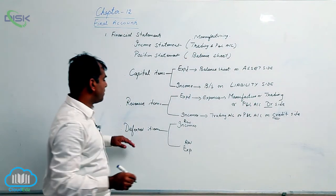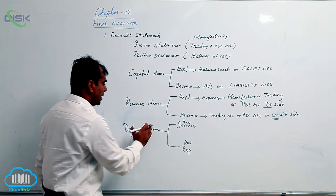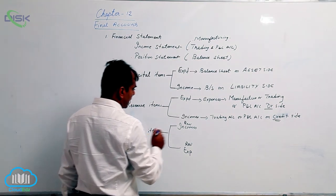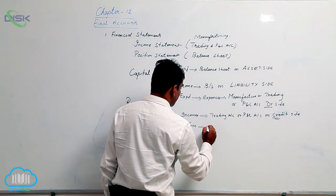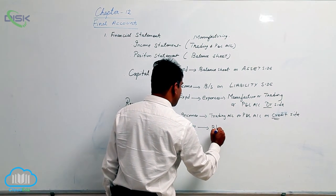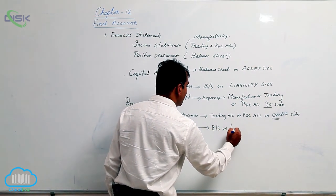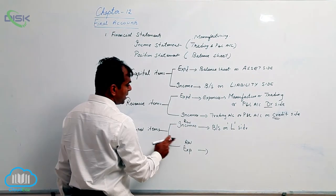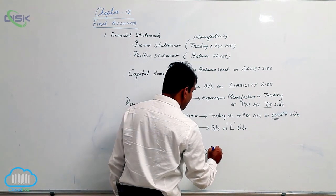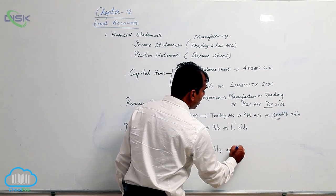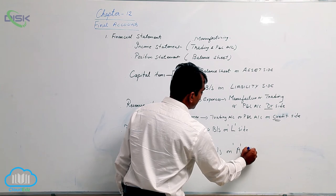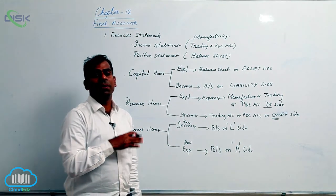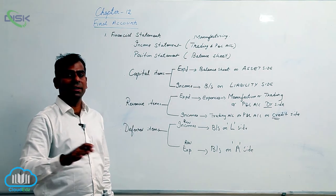Coming to deferred items: deferred revenue incomes are taken in the balance sheet on the liability side. Similarly, deferred revenue expenses are taken in the balance sheet on the asset side. You have to remember these important points before preparation of final accounts.